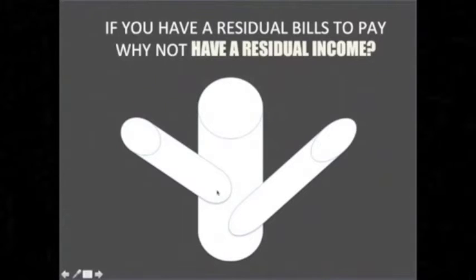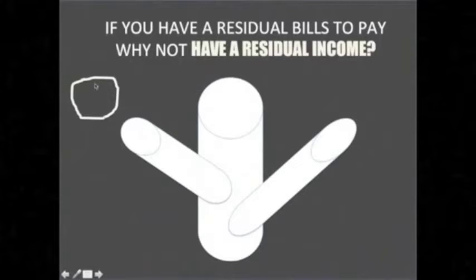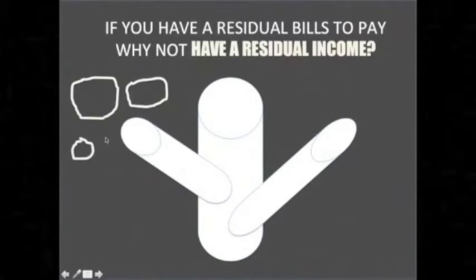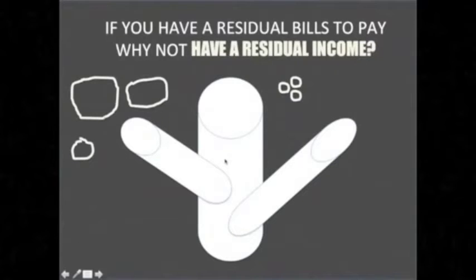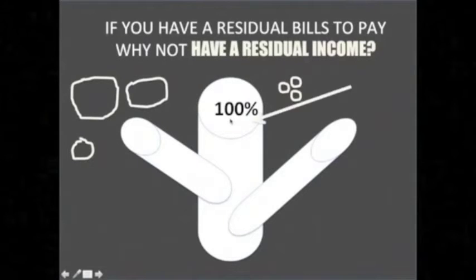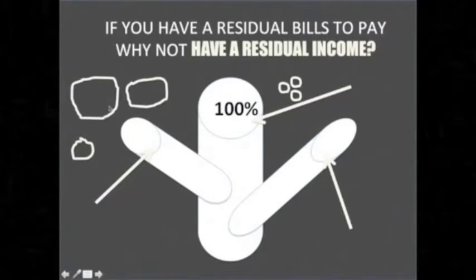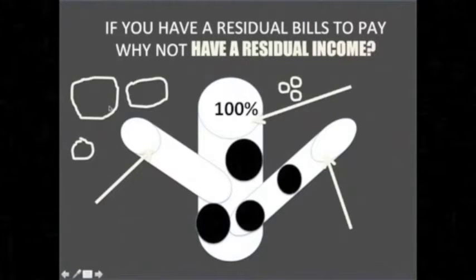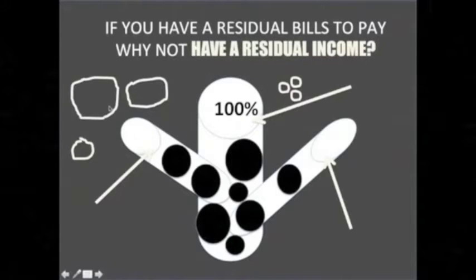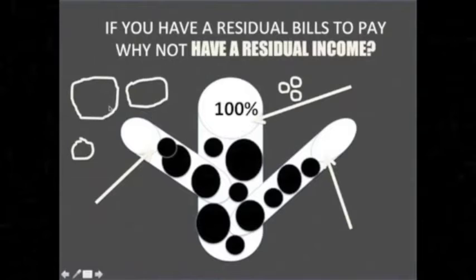Think of your income pipeline as different streams of income. If we want to fill this pipeline, imagine that each rock is one source of income — we have a big rock, a medium-sized rock, and a smaller rock. To fill the pipeline, you want the bigger rocks first, followed by medium-sized rocks.